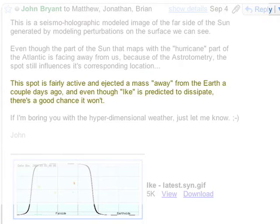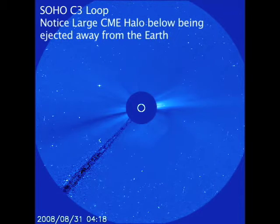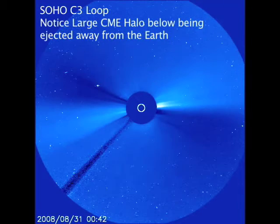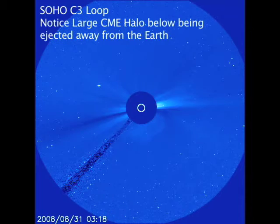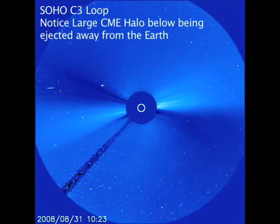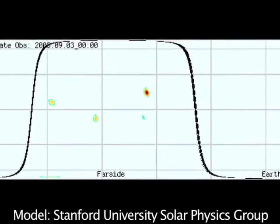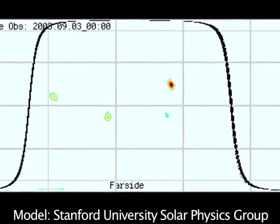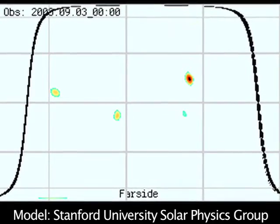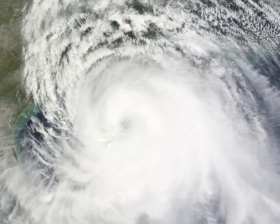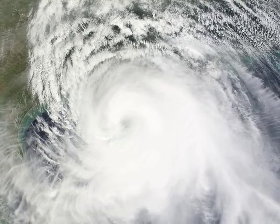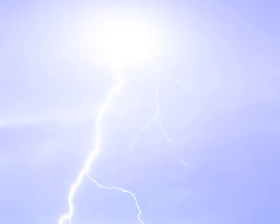My basis for this was a coronal mass ejection that was emitted away from the Earth, and I speculated that this was from a spot. The speculation about the nature of that spot being there was confirmed by a seismoholographic model of the sun that showed a spot. And so I sent out this email, and sure enough, the hurricane picked back up and ended up doing what it did.